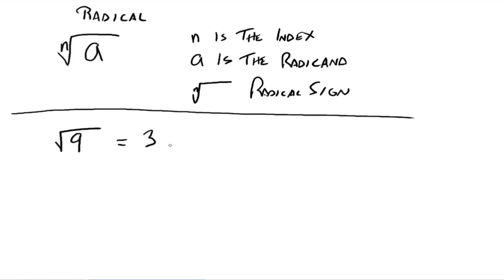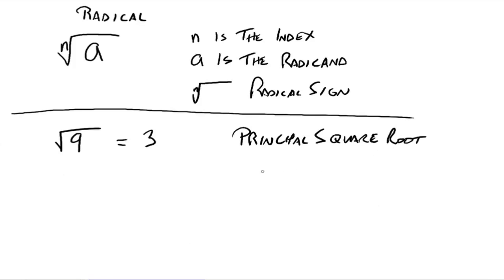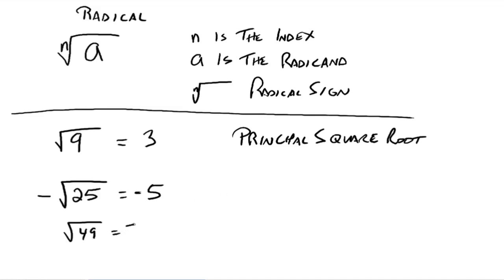You might be thinking that could also be equal to negative 3, because when you square 3 you get 9, and when you square negative 3 you also get 9 back. That's where the idea of the principal square root comes into play. The principal square root is going to be the positive one. So the square root of 9 equals 3, not negative 3. However, the negative of the square root of 25 is going to be negative 5. The square root of 49 is just 7 — the principal square root means we want the positive one.